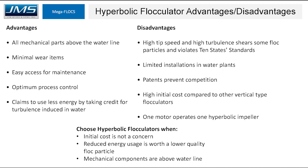Disadvantages of hyperbolic flocculators are that the high tip speed shears some floc particles, and they typically violate Ten State Standards, running at 6 to 9 feet per second on the tip. There are limited installations in water plants, some patents prevent competition, and there is a high initial cost compared to other vertical type mixers. One motor operates one impeller, adding to cost. You might choose this if initial cost is not a concern, reduced energy usage is valued, and all mechanical components need to be above the water level.